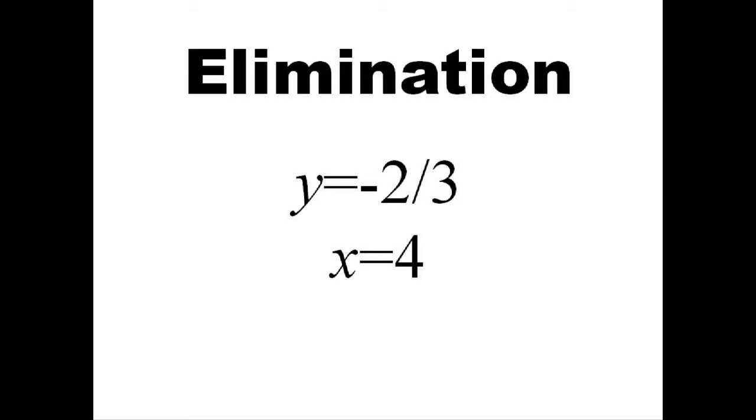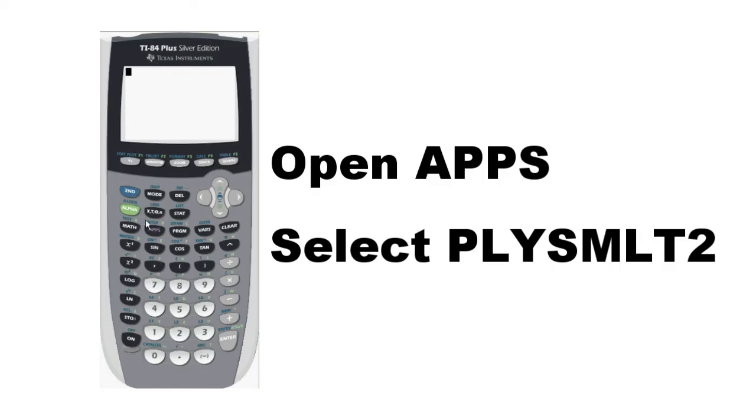Using a graphing calculator, we can solve this problem and much more complicated problems very quickly. On your TI-84, start by opening the Apps menu and open PolySmlt 2. You can skip down quickly using Alpha P.